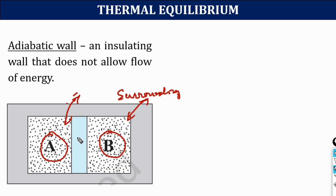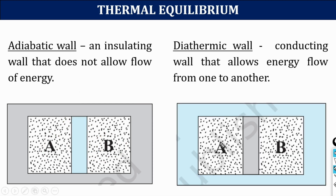When two systems are separated by an adiabatic wall, there is no exchange of matter and also no exchange of energy between the two systems. Another type of wall is known as the diathermic wall. If the two systems are separated by a diathermic wall, then there will be exchange of energy between the two systems, but there is no exchange of matter between them.